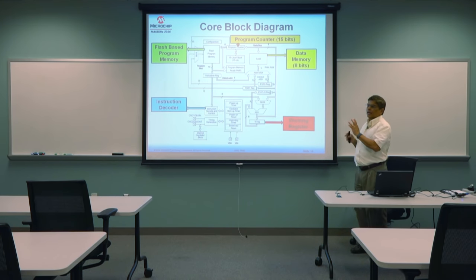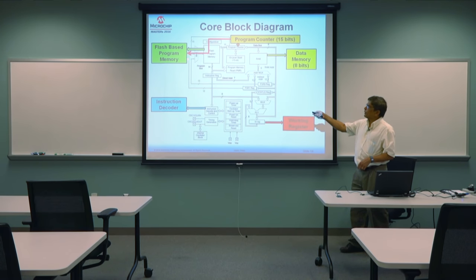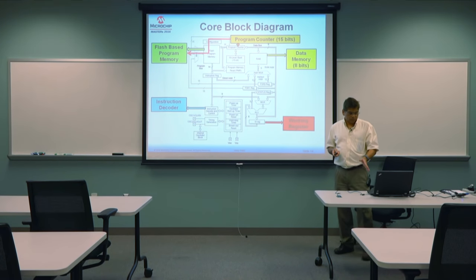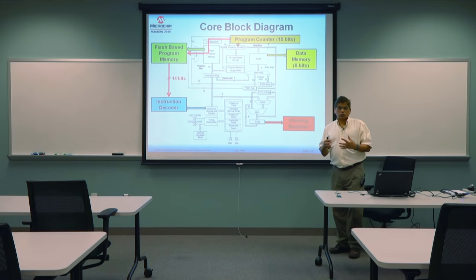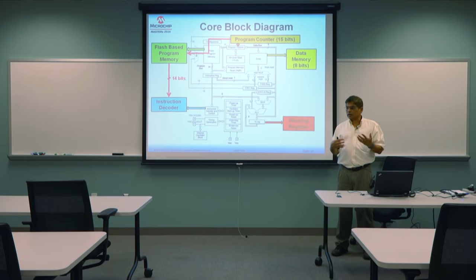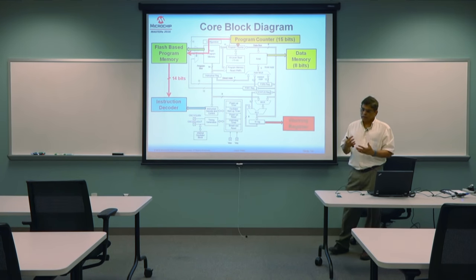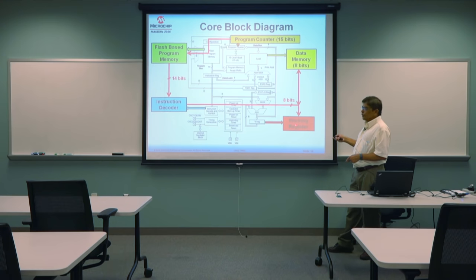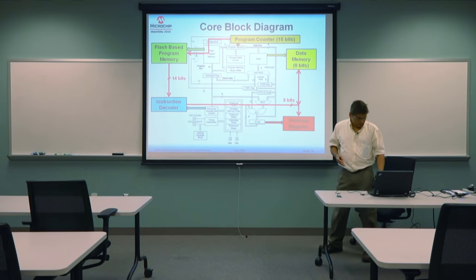The program counter points to a region in program memory and picks up the instruction to be executed. That instruction is loaded into the instruction decoder. The decoder decodes it — there are over 40 instructions in the PIC16 architecture, each doing different functions. The decoded instruction then works with the working register, the data memory, or both, depending on the instruction type.